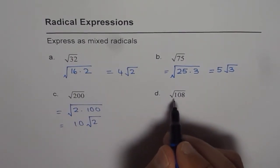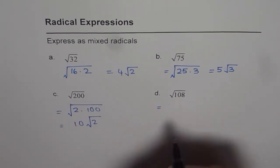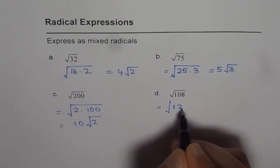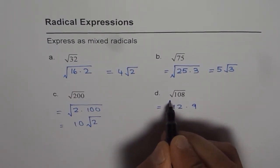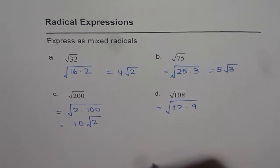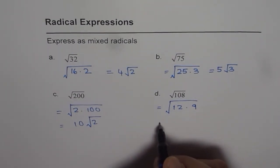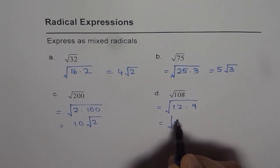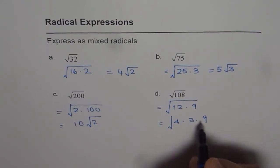How about 108? Well 108 is 12 times 9. 12 times 9 is 108. But I can still write 12 as 4 times 3. So I can write this as 4 times 3 and we already have 9.